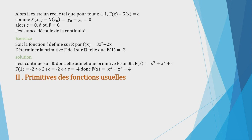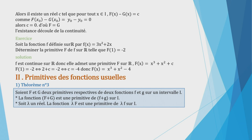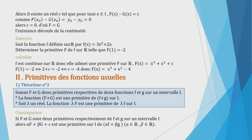Passons à la deuxième partie : primitives des fonctions usuelles. On va établir quelques formules sur les opérations des fonctions primitives. Théorème 3 : soit grand F et grand G deux primitives respectives de petit f et petit g sur un intervalle I. La fonction F + G est une primitive de f + g sur I. Pour λ réel, la fonction λ·F est une primitive de λ·f sur I. Conséquence : αF + βG + c est une primitive de αf + βg sur I, pour tous réels α et β.